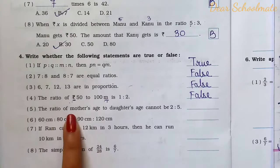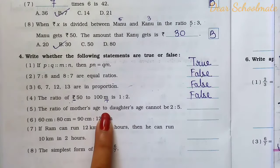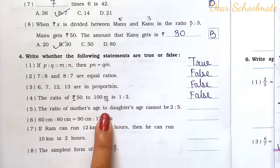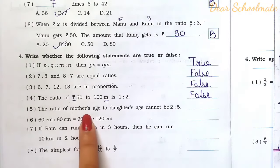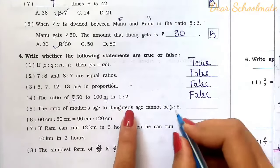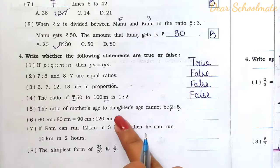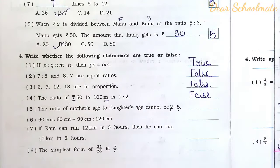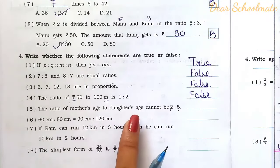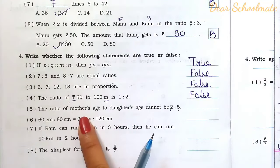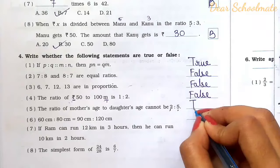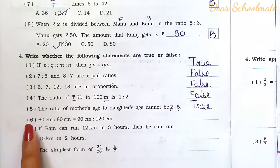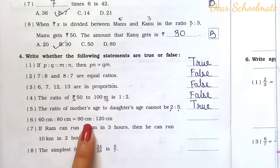Number 5: The ratio of mother's age to daughter's age cannot be 2 is to 5. Since in the ratio 2 is to 5, the daughter's part is greater than the mother's, this is impossible as the mother is always older than the daughter. So the statement that this ratio cannot occur is true.